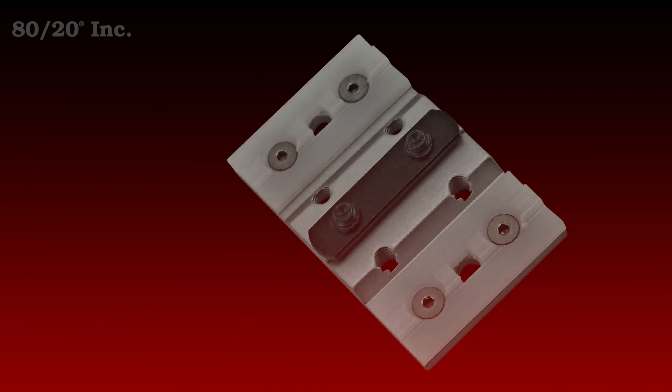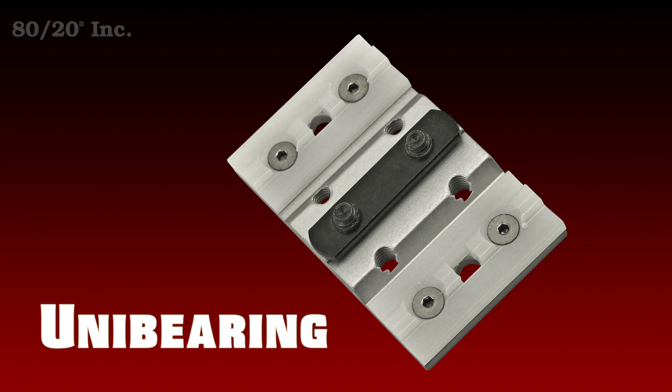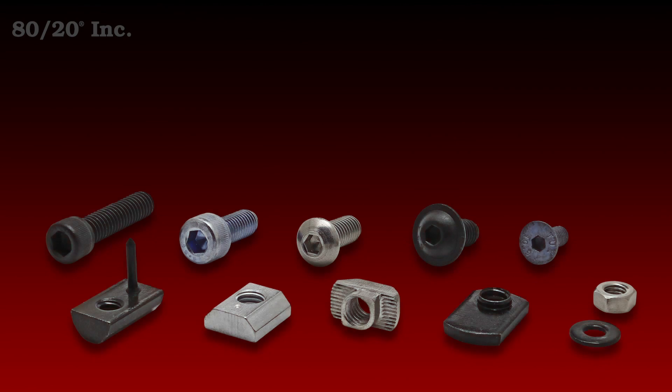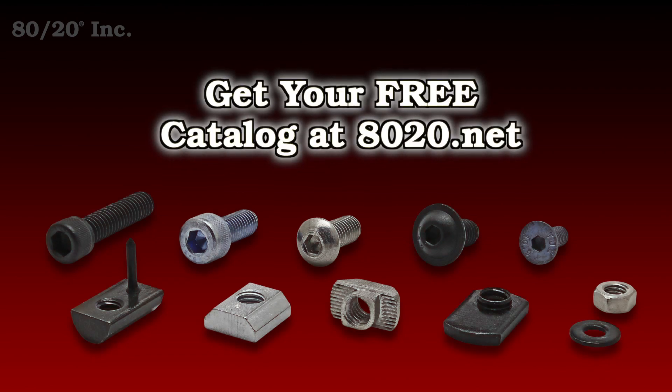Our next style is unibaring. This option is great for running two profiles parallel with each other. Now although these come pre-assembled, a bolt assembly will be needed. More information on 8020's recommended bolt assemblies can be found in the 8020 product catalog.